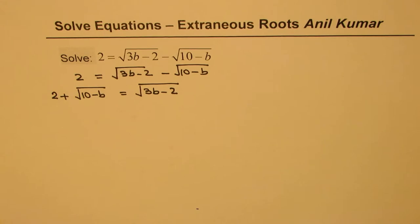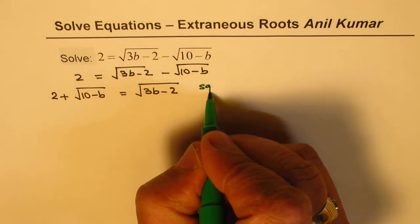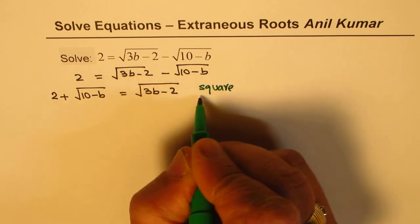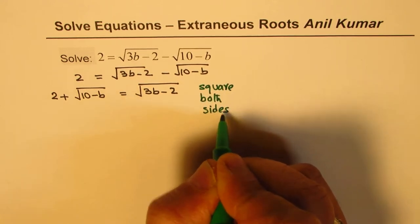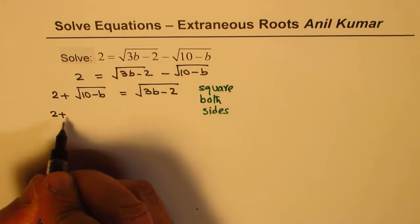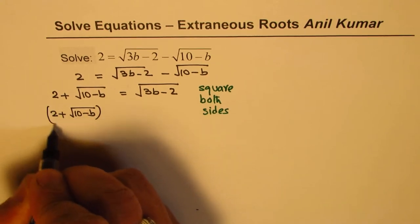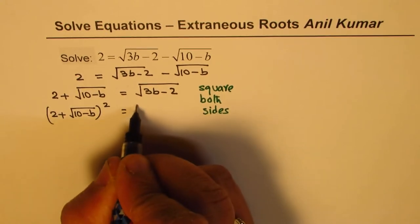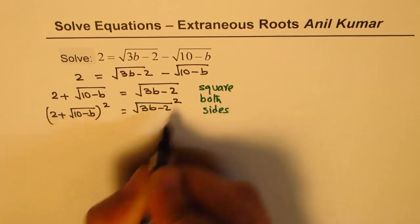Now at this stage we need to get rid of this square root, so we'll square both sides. When you square both sides we get 2 plus square root of 10 minus b whole square equals square root of 3b minus 2 whole square.